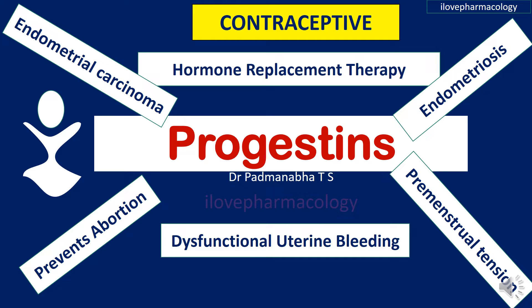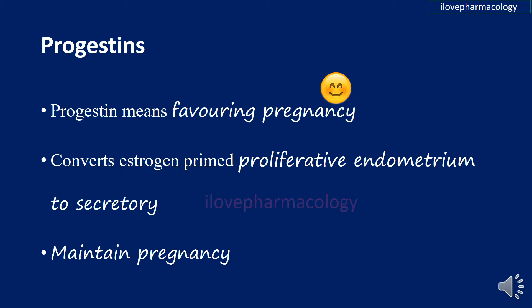Welcome to the class on progestins. In this class, you will learn about the progestins, what are the types of progestins, as well as the various actions of progestins. Progestins are substances which convert the estrogen-primed proliferative endometrium to secretory endometrium, thereby responsible for maintenance of pregnancy. Progestin means favoring pregnancy.